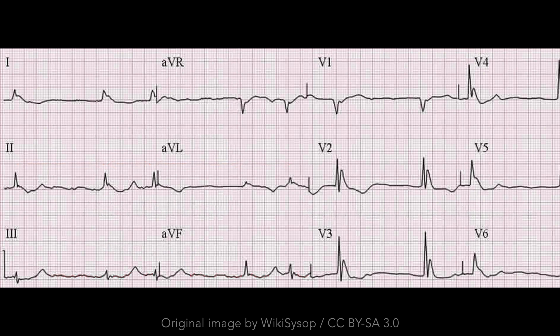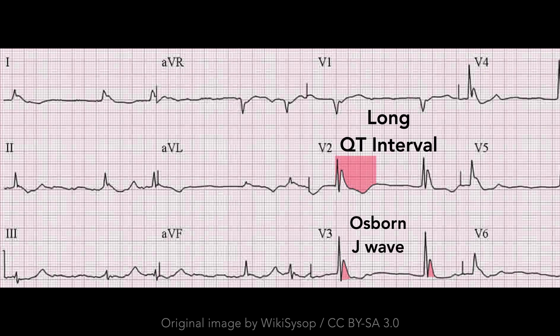In summary, hypothermia can lead to a variety of different ECG manifestations, including J-point elevation, slowed impulse conduction, and bradyarrhythmias. In this ECG specifically, we can make note of the Osborne J-wave, a long QT interval, and atrial fibrillation with a slow ventricular response.